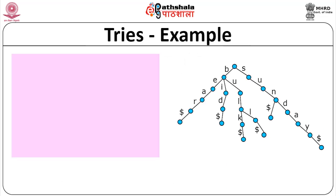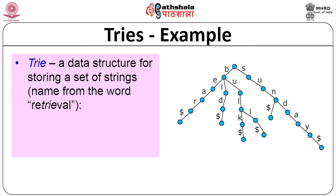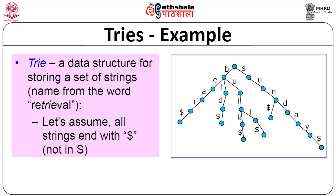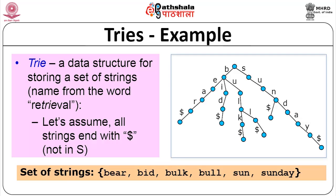Let us take another example to understand tries better. We assume that all strings end with a dollar sign '$', which is not part of any word — and this dollar does not appear as a regular character in any word. Consider this set of strings: bear, bid, bulk, bull, sun, and sunday.